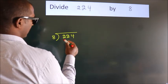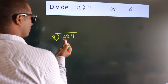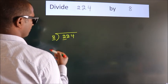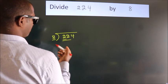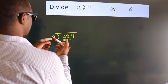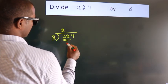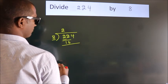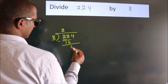Here we have 2, here 8. 2 is smaller than 8, so we should take 2 numbers: 22. A number close to 22 in the 8 times table is 8 twos, 16. Now we should subtract. We get 6.